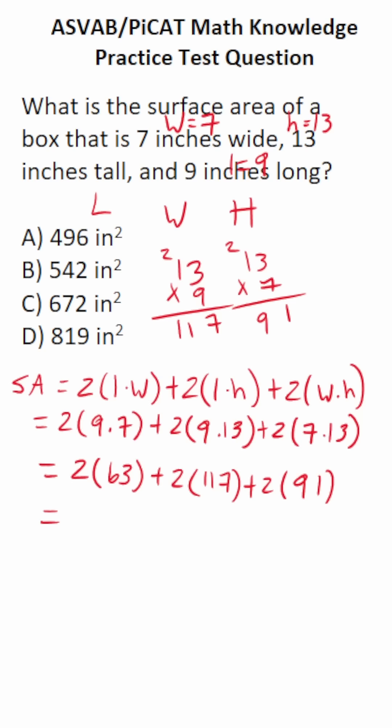Now for all of these, I'm going to have to work them off to the side as well, so as not to make a mistake. This is a very tedious but easy problem. We have 63 times 2. 2 times 3 is 6, 6 times 2 is 12. So this is 126.